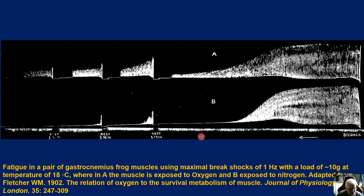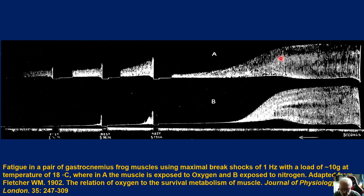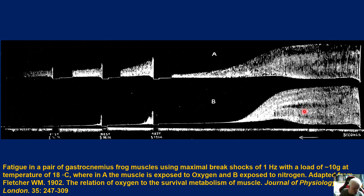In condition A, the muscle is exposed to oxygen. In condition B, the muscle is exposed only to nitrogen — no oxygen. What you can see here are the force outputs and the sustained force output over a prolonged period. Notice that the amount of force being produced is significantly impaired when oxygen is limiting, and the ability to sustain that force is also limited — compared to condition A with oxygen versus condition B without oxygen.